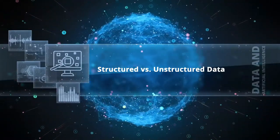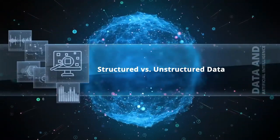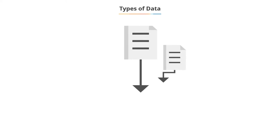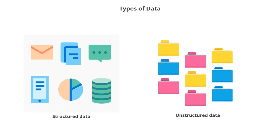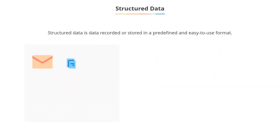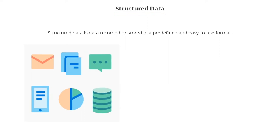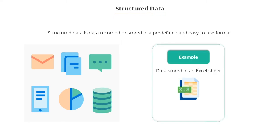Structured vs. Unstructured Data. Continuing our journey into understanding the different types of data, let us now discuss structured and unstructured data. Data recorded or stored in a predefined format for easy search and used during analysis are referred to as structured data. For example, data recorded in Excel constitutes structured data when different rows and columns are clearly associated with certain characteristics.